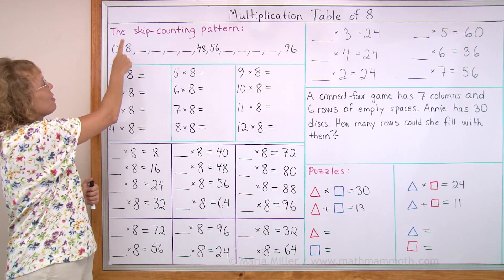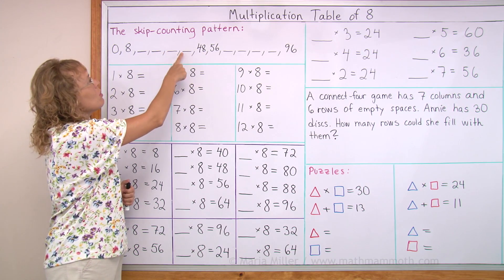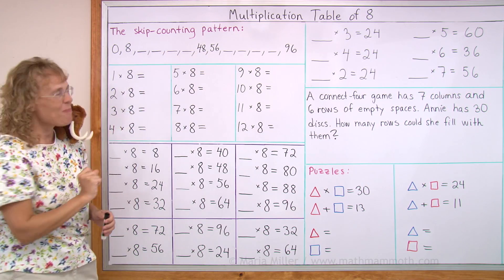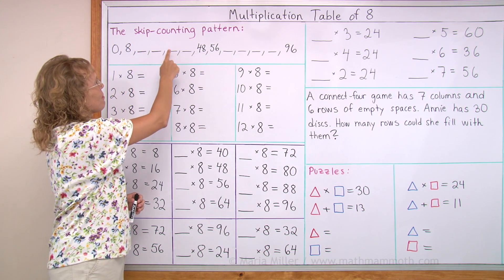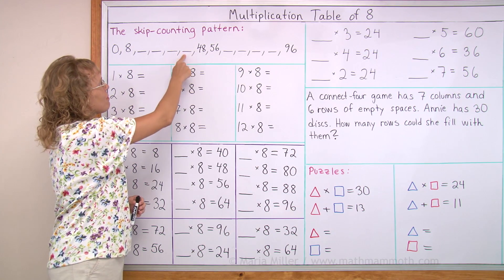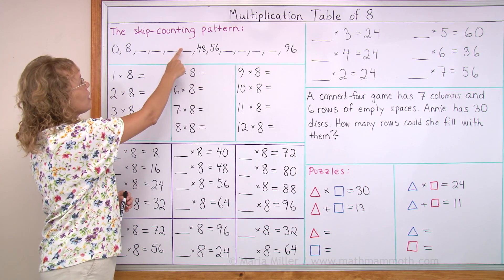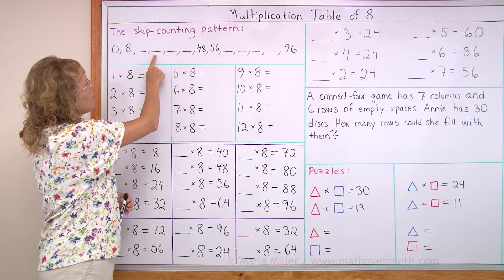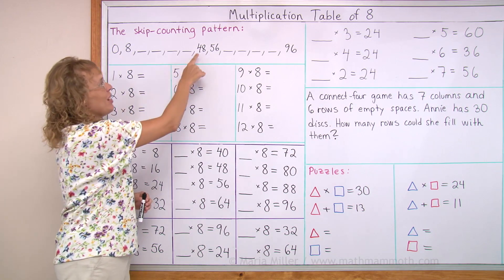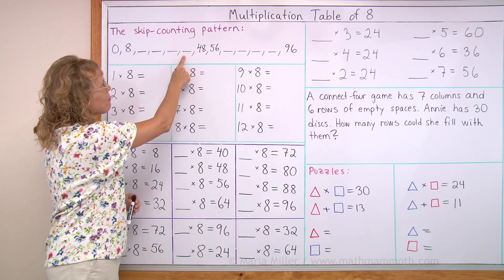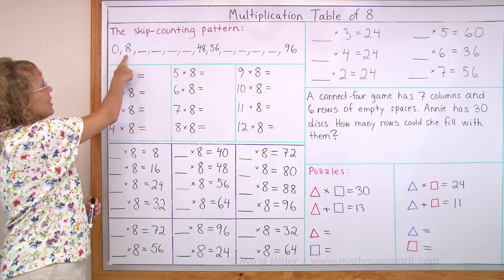Again: 0, 8, 16, 24, 32, 40, and 48. Now it's your turn: 0, 8 — and then backwards: 48, 40, 32, 24, 16, 8, and 0. Your turn: 48 ... 8 ... and 0.